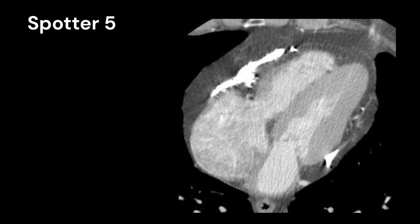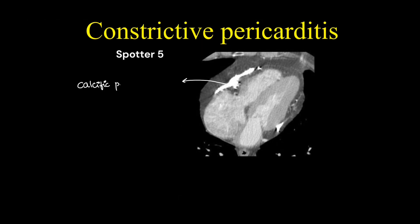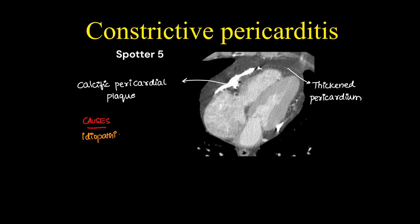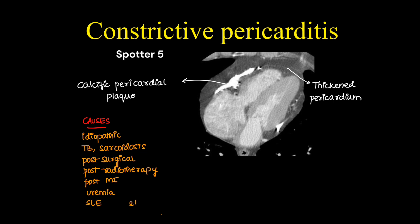This was a case of constrictive pericarditis. We can see calcific pericardial plaques and a thickened pericardium. Causes of this condition include, most commonly, idiopathic infections such as TB, sarcoidosis, post-surgical, post-radiotherapy, post-myocardial infarction known as Dressler syndrome, uremia, and SLE.